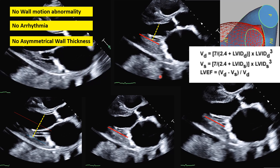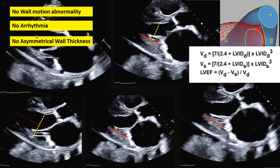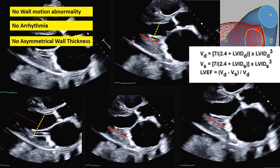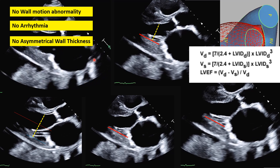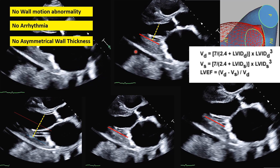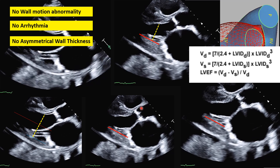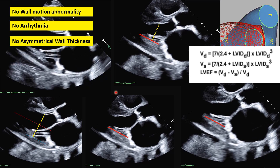Those are the general rules for measuring ejection fraction by 2D or M-mode. To be reliable, none of those conditions should be present, and we need a correct plane without papillary muscles visible and no foreshortening or off-axis imaging. We then go to the beat with the largest diameter, because breathing and small changes in heart position alter the angle slightly. If we acquire three beats, we find the one with the largest diameter at diastole and systole and measure that one.